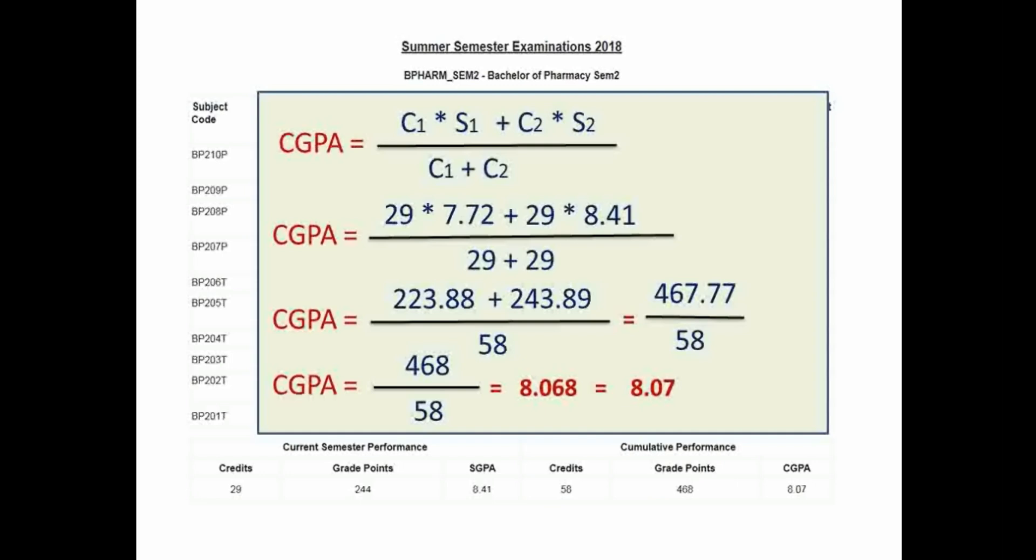When you are dividing this grade point with your total credits, you will receive the answer 8.068. The value is rounded up over here because 0.068, the 8 digit is higher than 5, so 6 is converted into 7. After rounding up, you will receive the figure that is 8.07, which is your CGPA of semester 2.